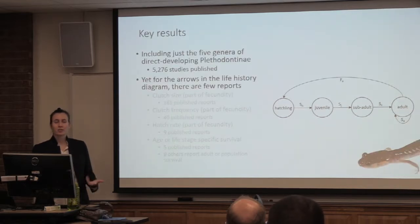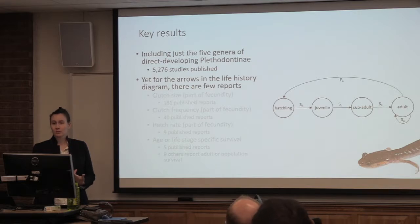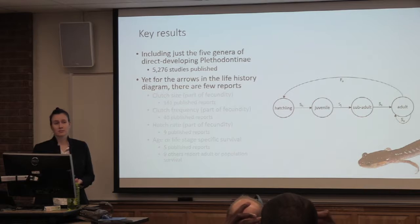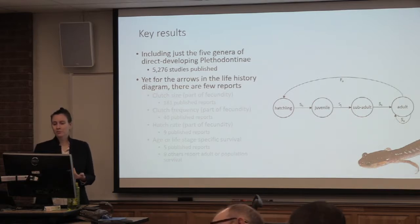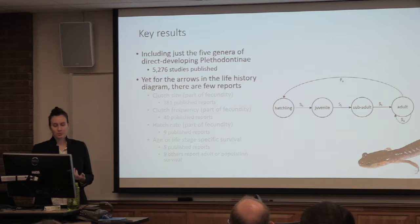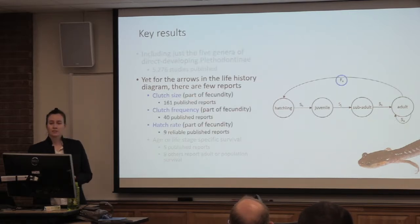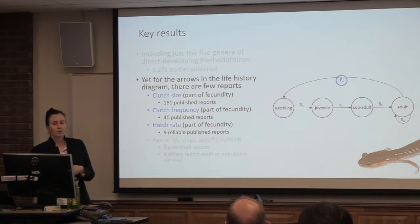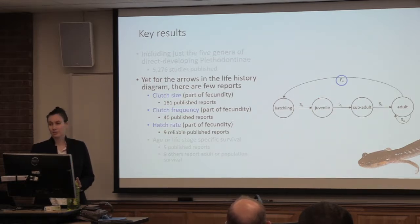So what are the key results of this literature review? Including just the five genera of direct-developing Plethodontinae, there are 5,276 studies that have been published. But for the arrows in this life history diagram, there are really only a few reports. Clutch size is the most well-reported value — all components of the fecundity term — with 161 published reports of clutch size in these genera.